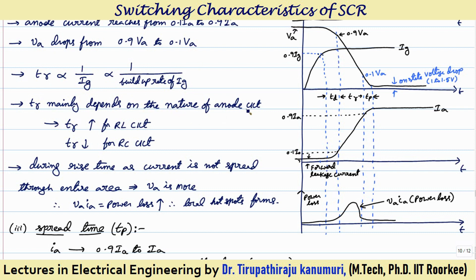Rise time also depends on the nature of the external anode circuit. If the circuit connected is an RL circuit, the inductor will not allow sudden change in current — it opposes di/dt — so the slope will decrease and the rise time will be longer. For an RC circuit it does not oppose the rate of change of current, so the rise time can be steeper. For RL load the rise time is effectively longer.